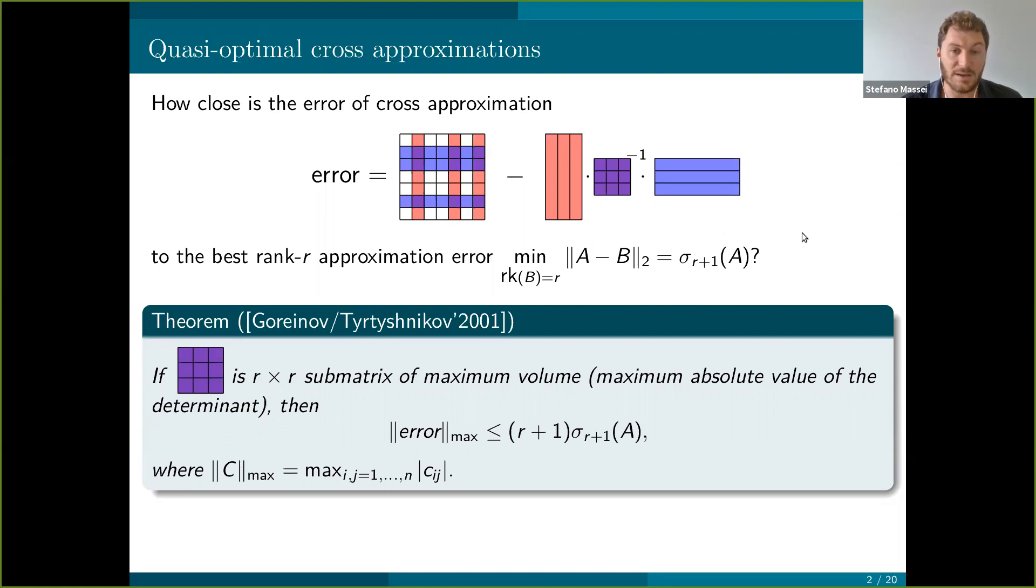In this talk we are mainly interested in matrices and we are interested both in studying algorithms for building this kind of approximation and also in providing results about the error of the resulting approximants. In particular, we would like to retrieve bounds that link the error with quantities that are usually linked to the best low-rank approximation, functions of the singular values of the target matrix. Historically, the first result in this direction is this theorem by Gorinov and Terteschnikov that tells us that if we select the row and column indices in a way that these core submatrices here obtain the maximum volume possible among all the R by R submatrices, then we can bound the entry-wise magnitude of the error with R plus 1 times the R plus 1 singular value of the matrix.